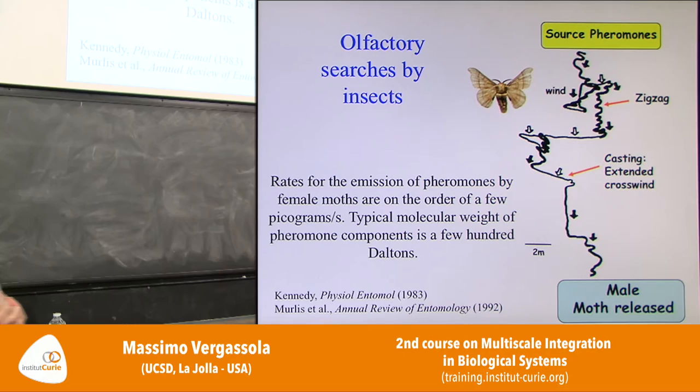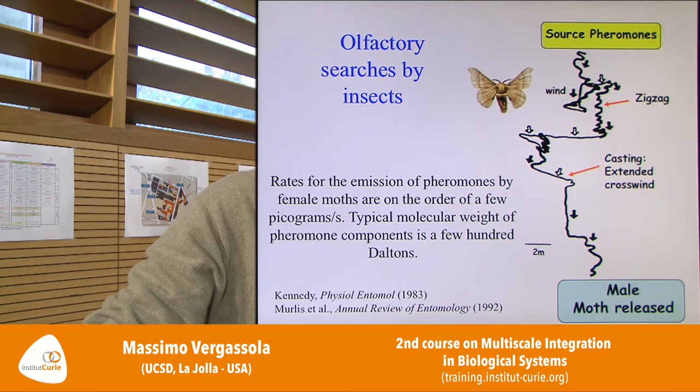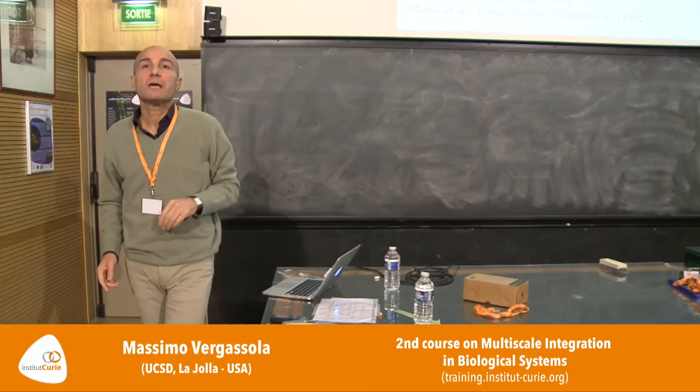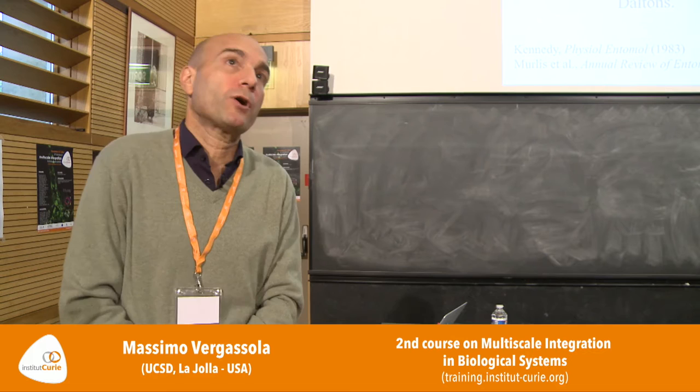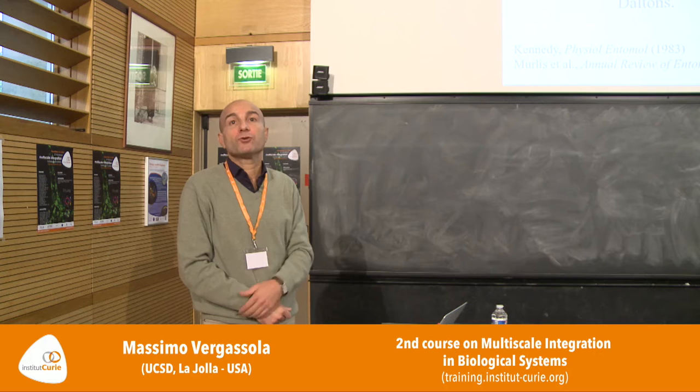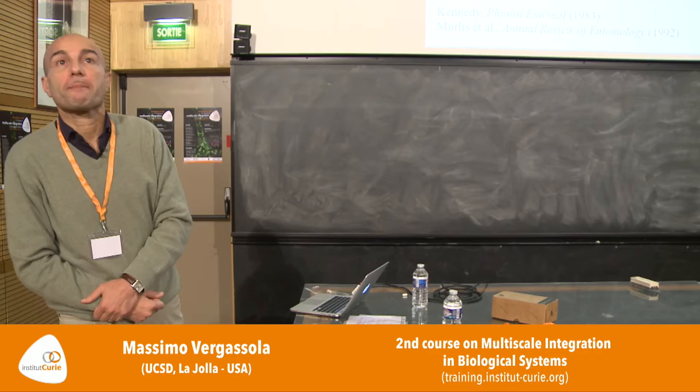A question was raised: with many moths in an area, how do they distinguish one female's pheromones from another's? These blends of pheromones are species-specific. The particular composition of the blend is species-specific, and this is probably precisely to prevent going after a female of another species with which you cannot mate.